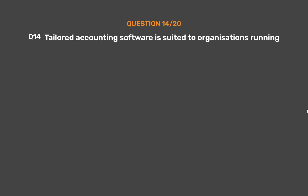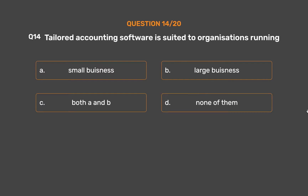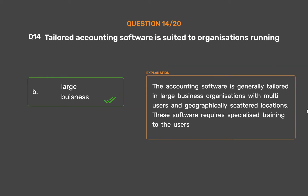Question number 14. Tailored accounting software is suited to organizations running: Option A: Small business. Option B: Large business. Option C: Both A and B. Option D: None of them. The correct answer is Option B: Large business. The accounting software is generally tailored in large business organizations with multi-users and geographically scattered locations. The software requires specialized training to the users.